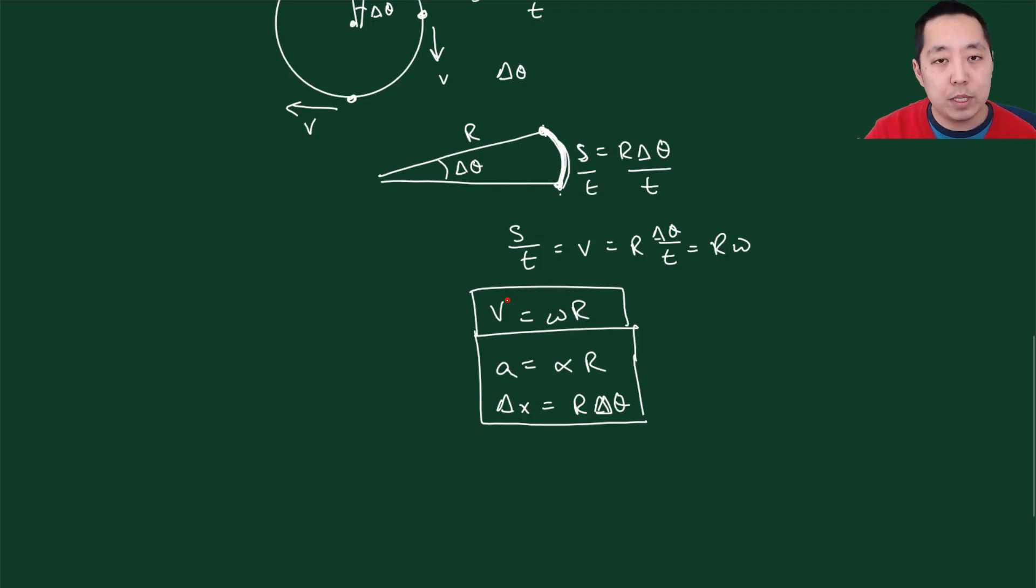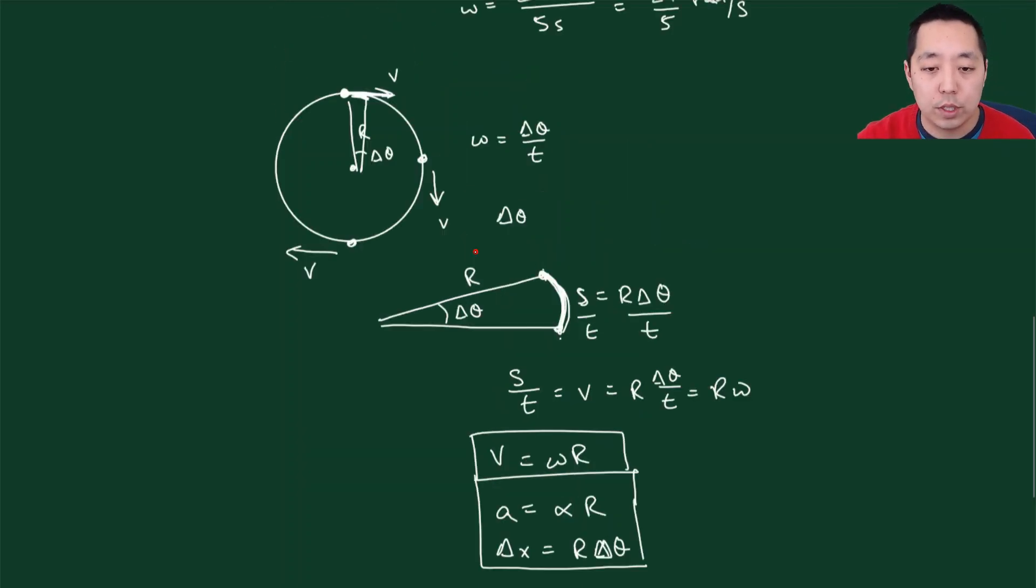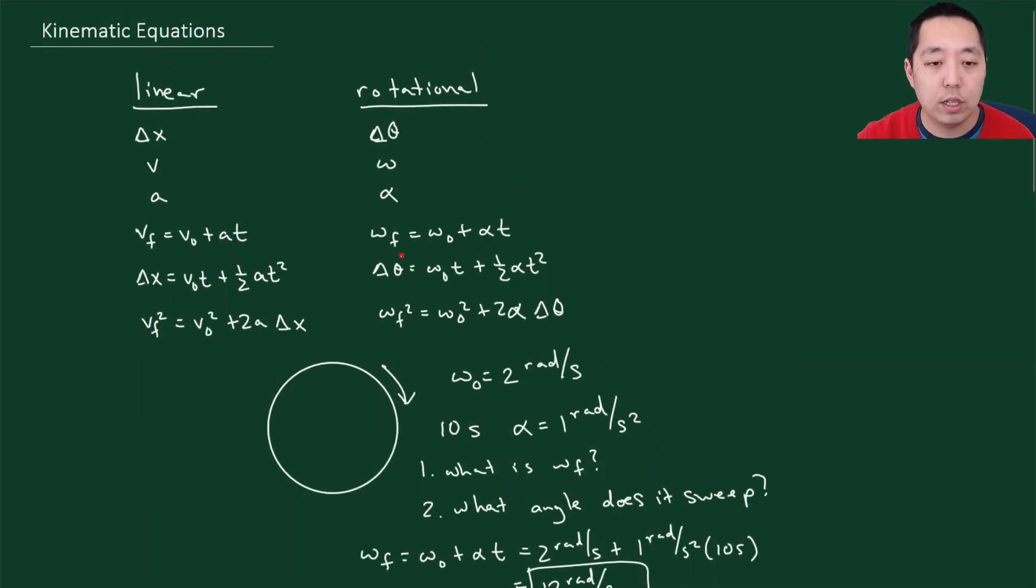So, that wraps up all of rotational kinematics. Those are all the equations. Let's just go back up to our basic equations. These are all our basic rotational equations that we use. And what we're gonna see next is how we apply Newton's second law, f equals ma, when we apply it to rotation.